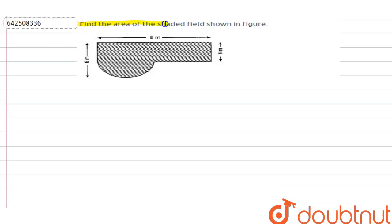find the area of the shaded field shown in figure. Now if you see this, we can see clearly that this is a semicircle which has a radius of - let's say this total distance is 6 meter, and so if this distance is 4 meter, we have